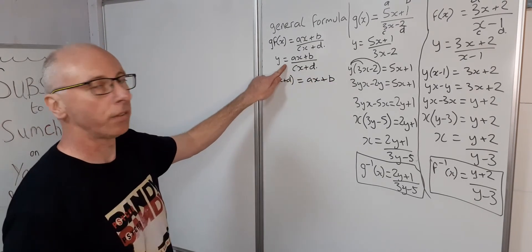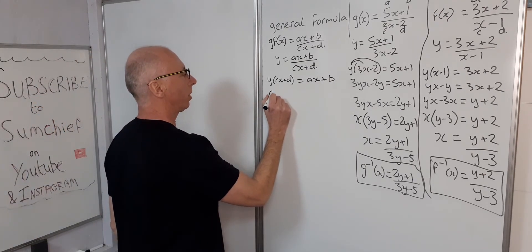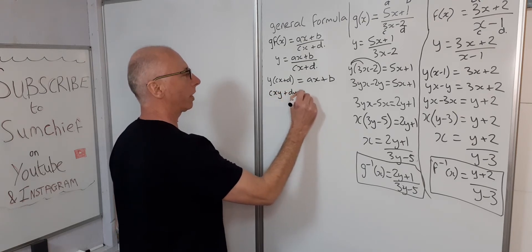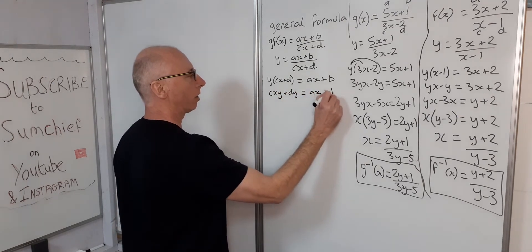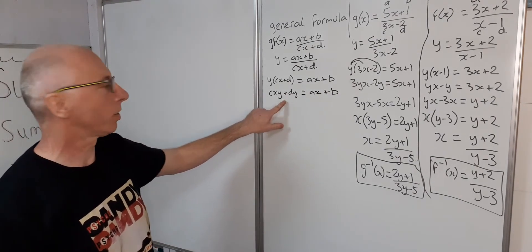Okay, so that's taking that over there. Now we get rid of the brackets, so bring the c to the front: cxy plus dy equals ax plus b. Now let's get all the x's on one side.